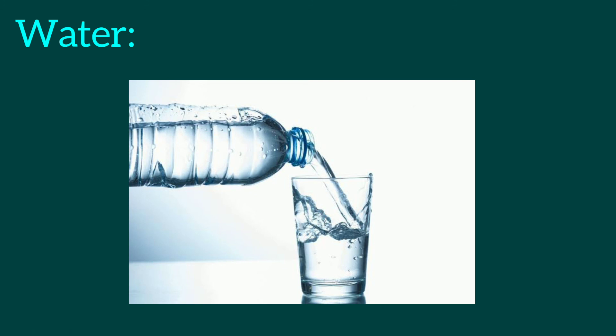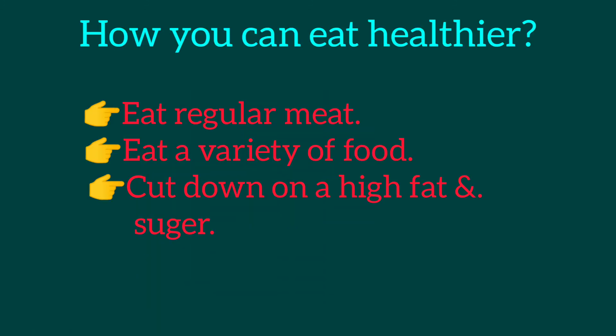How can you eat healthier? First, eat regular meals — breakfast is the most important meal of the day, keeping your body filled with fuel to get through the day. Second, eat a variety of foods such as fruits and vegetables, and try to eat more apples and grapes and less cookies and chips. Third, cut down on high fat and sugar — drink water or juice instead of soda.